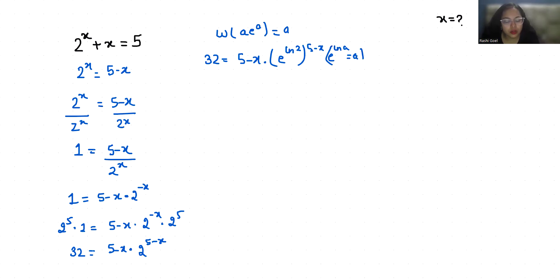Since e^(ln 2) equals 2, we can write 32 equals (5 - x) times e^(ln 2 times (5-x)).